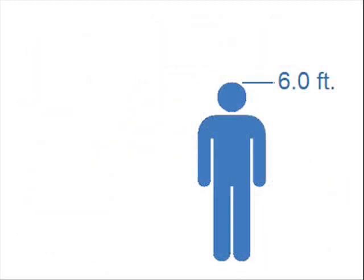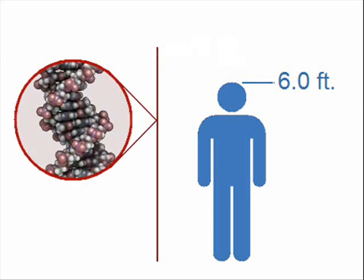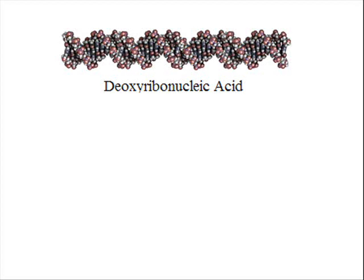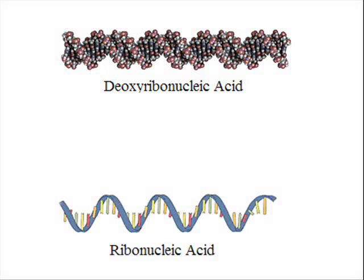The average man is approximately six feet tall. If unraveled, the DNA molecule from any cell in his body would be approximately seven feet long. The molecule is called deoxyribonucleic acid. One of the information packaging processes of the cell is to collect information from the DNA molecule to do work. This produces an RNA molecule called ribonucleic acid. The process is called transcription.